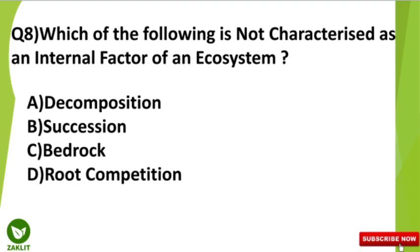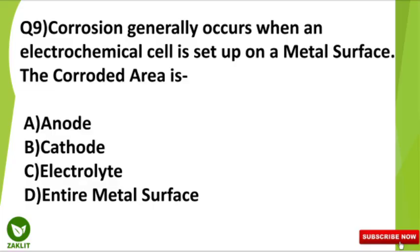The ninth question is: corrosion generally occurs when an electrochemical cell is set up on a metal surface. The corroded area is what? Think about it correctly.